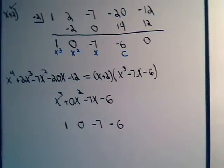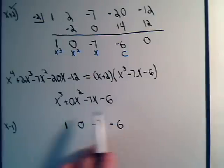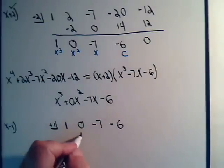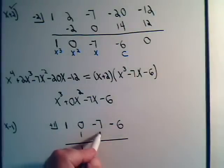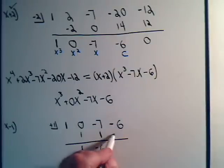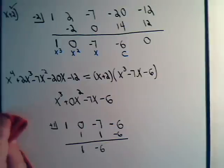Let's start all over again with x minus 1 — would that be a factor of this polynomial? We write down plus 1, and underneath the second number we write it down again. Add and multiply: 1 times 1 is 1. Minus 7 plus 1 is minus 6, times plus 1 is minus 6. Those do not add up to 0. So x minus 1 is not going to be a factor.